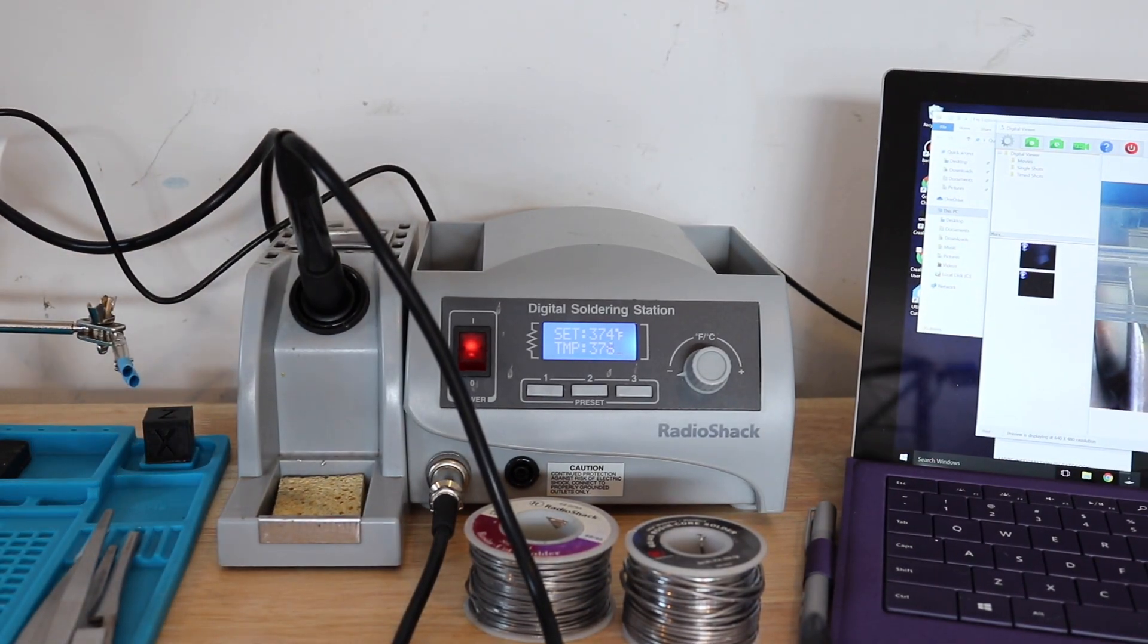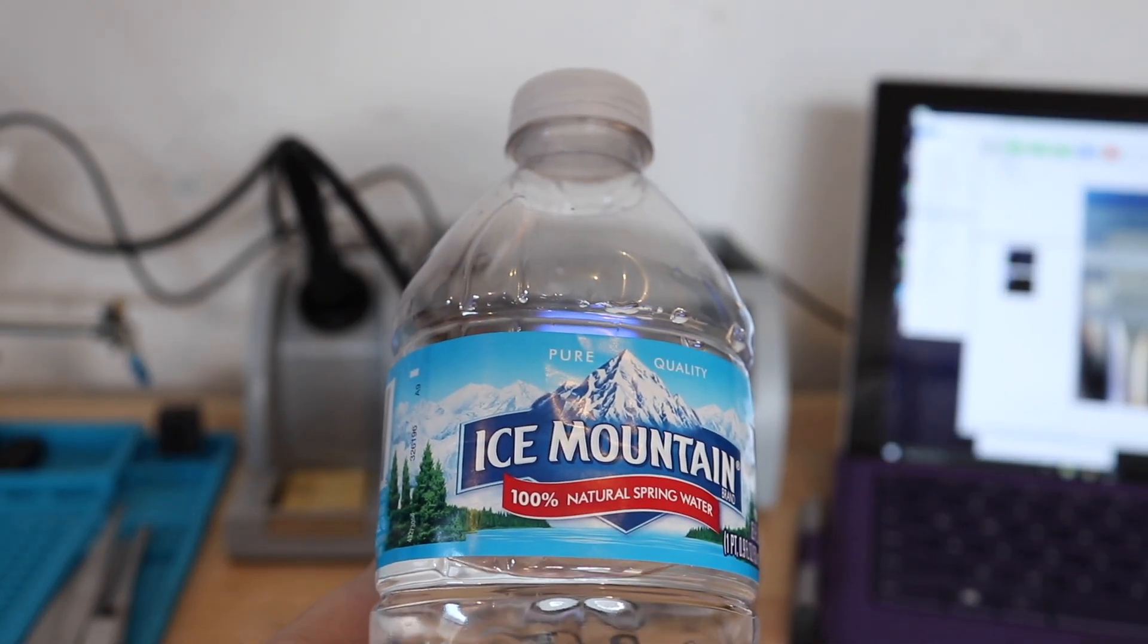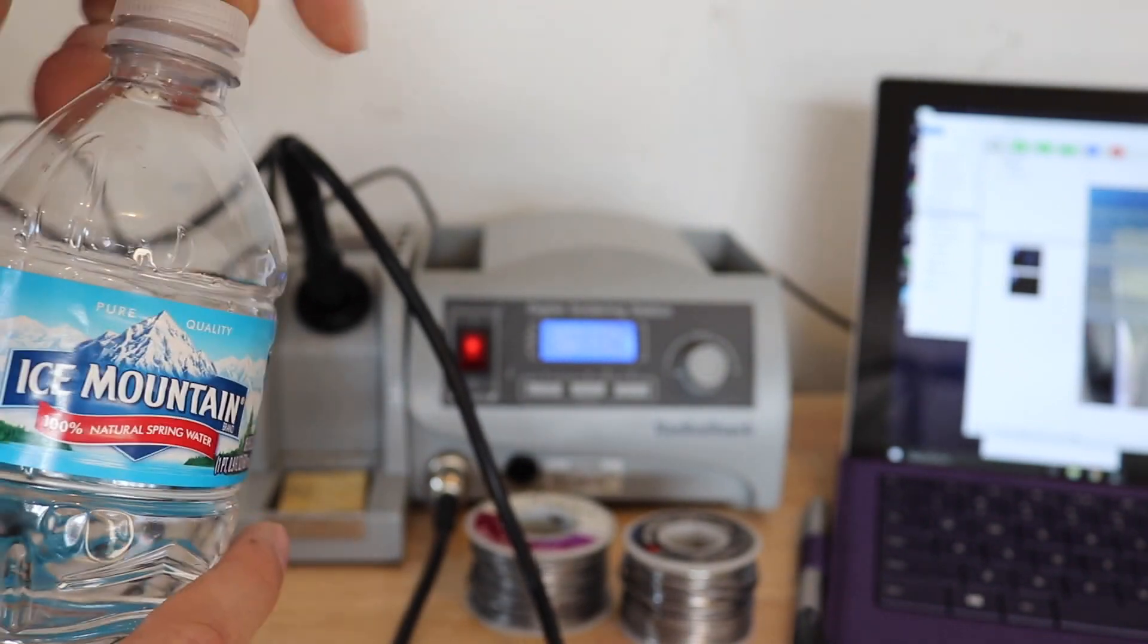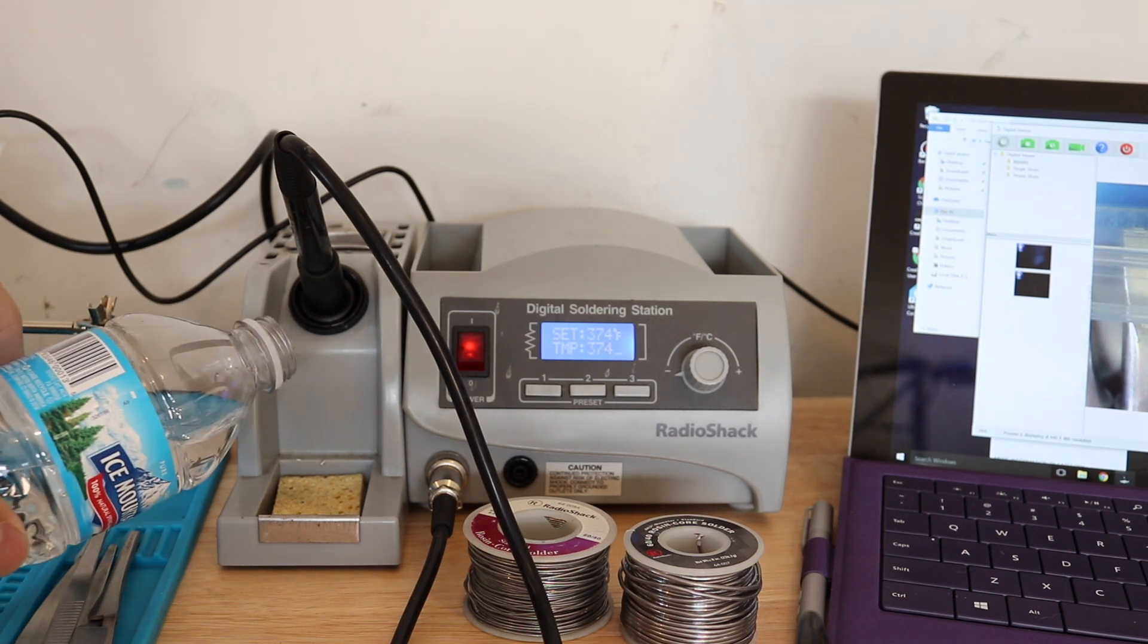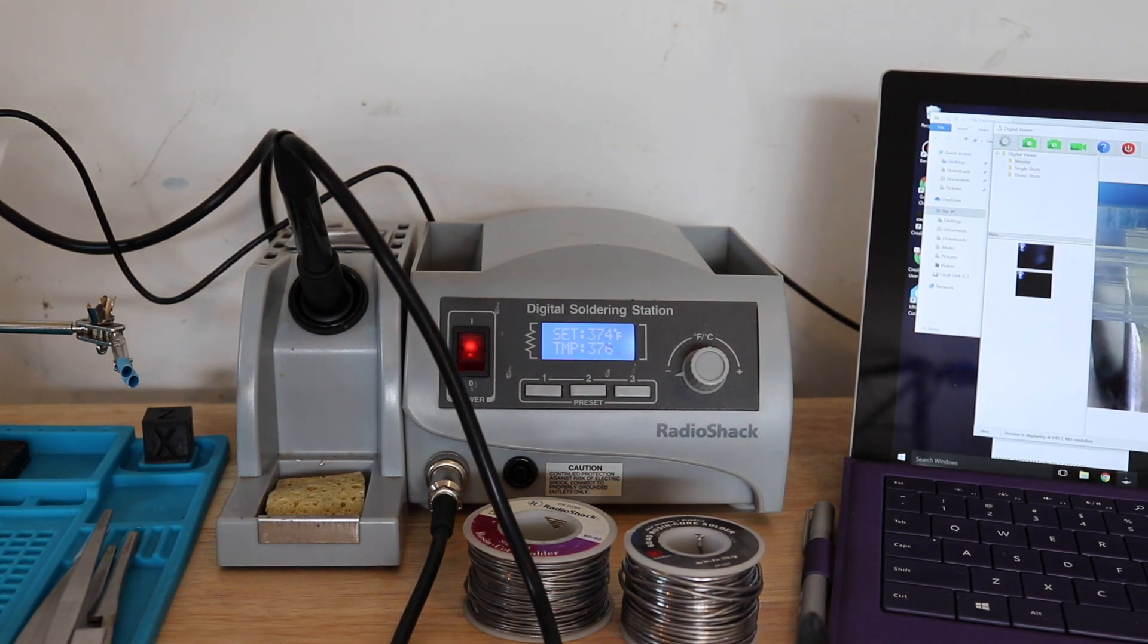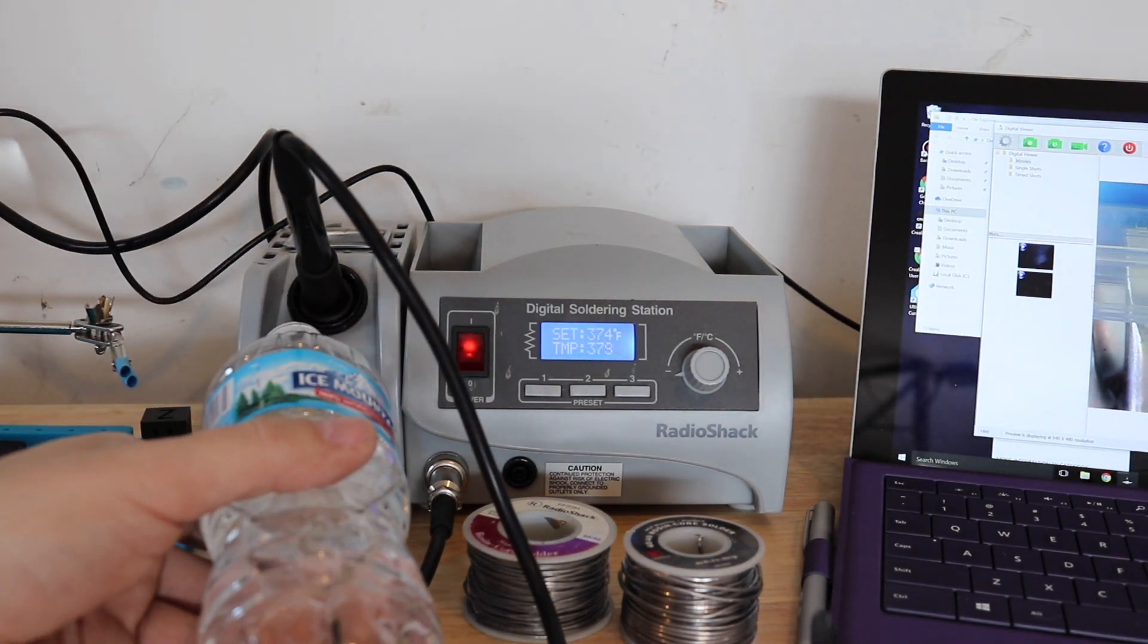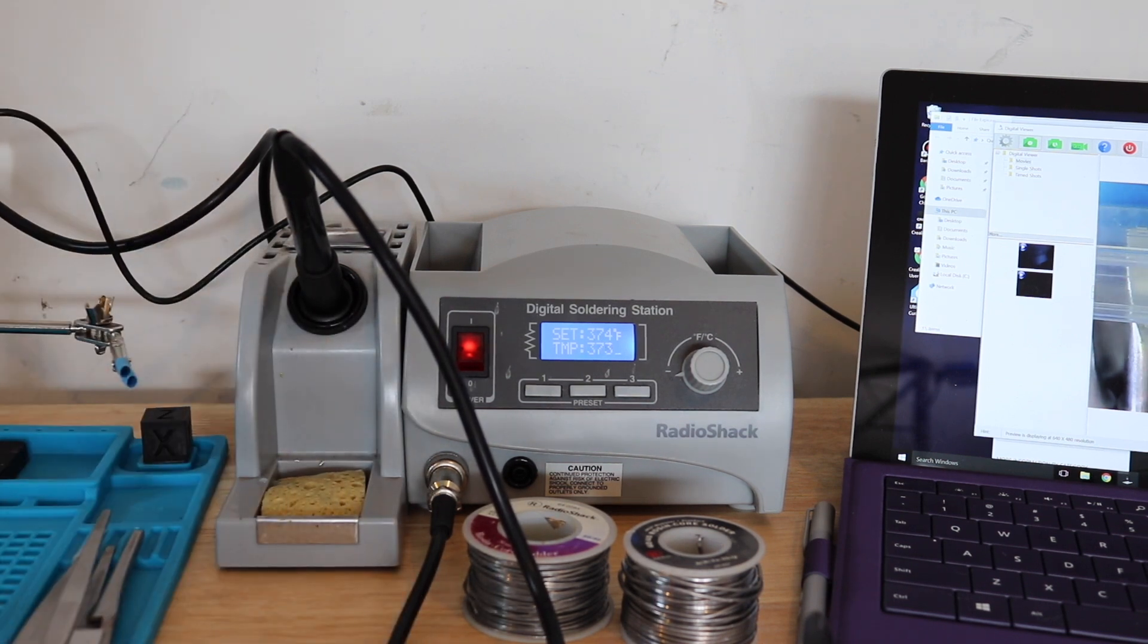All right. Well, we need to get the sponge wet. And what's the best water for it? Of course, the best Midwest bottled water is Ice Mountain. Only the best will do for my Radio Shack solder station. Now, when you wet down the sponge, you really just want it barely wet. I mean, damp. You don't want to load it up and have it sopping wet. So when you clean the tip, a just above damp sponge will do.